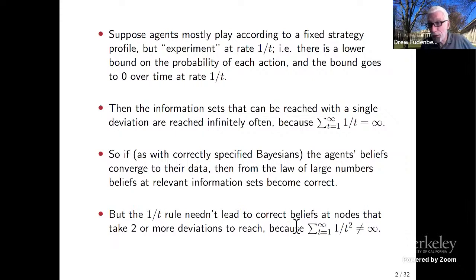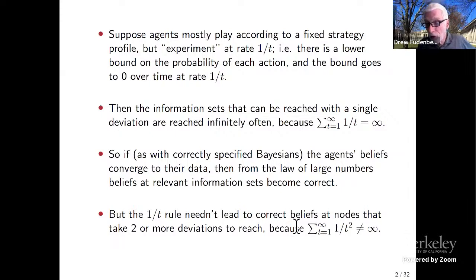So that's the first hint into how learning might lead to equilibrium — we need some experimentation with off-path actions, in particular at rate 1/T. But note: if we want equilibrium refinements like backwards induction, we need more information further down the tree. If agents experiment at rate 1/T, that needn't lead to correct beliefs at nodes that take two or more deviations to reach, because the sum of 1/T² is finite.